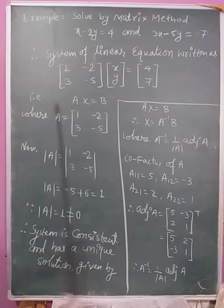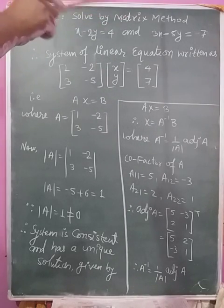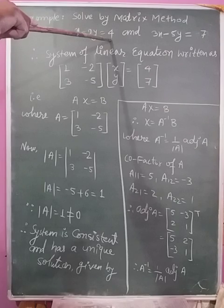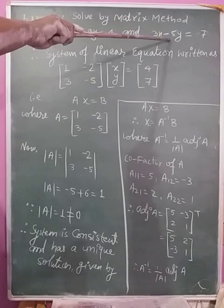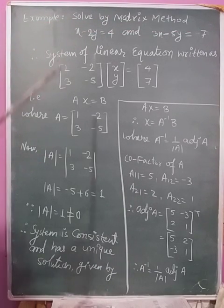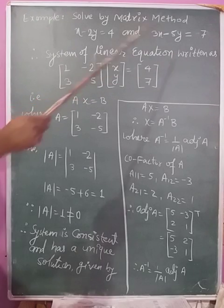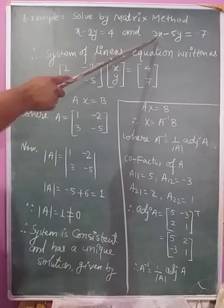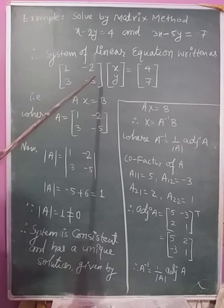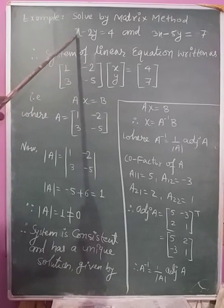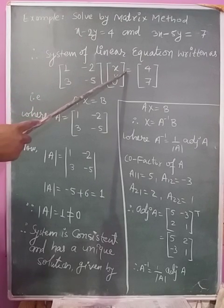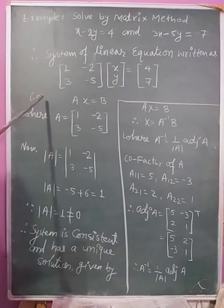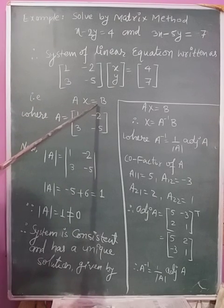Now example: Solve by matrix method. Equation is x - 2y = 4 and 3x - 5y = 7. System of linear equations can be written as coefficients 1, -2 and second coefficients are 3, -5. Variables we have are x, y, equal to right side 4 and 7.